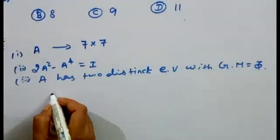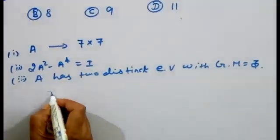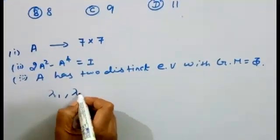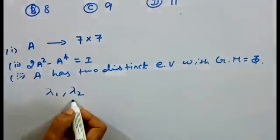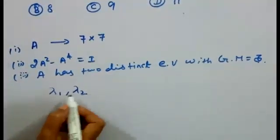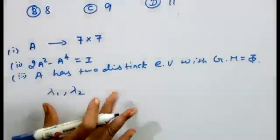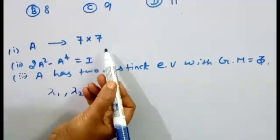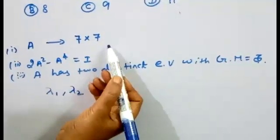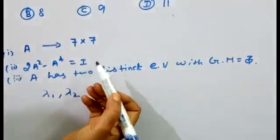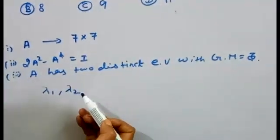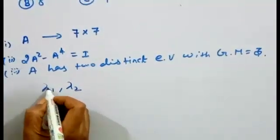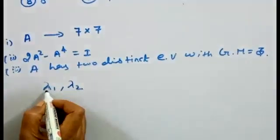We have two distinct eigenvalues: λ1 and λ2. The given matrix is 7×7, so there are seven eigenvalues in total counting multiplicity.